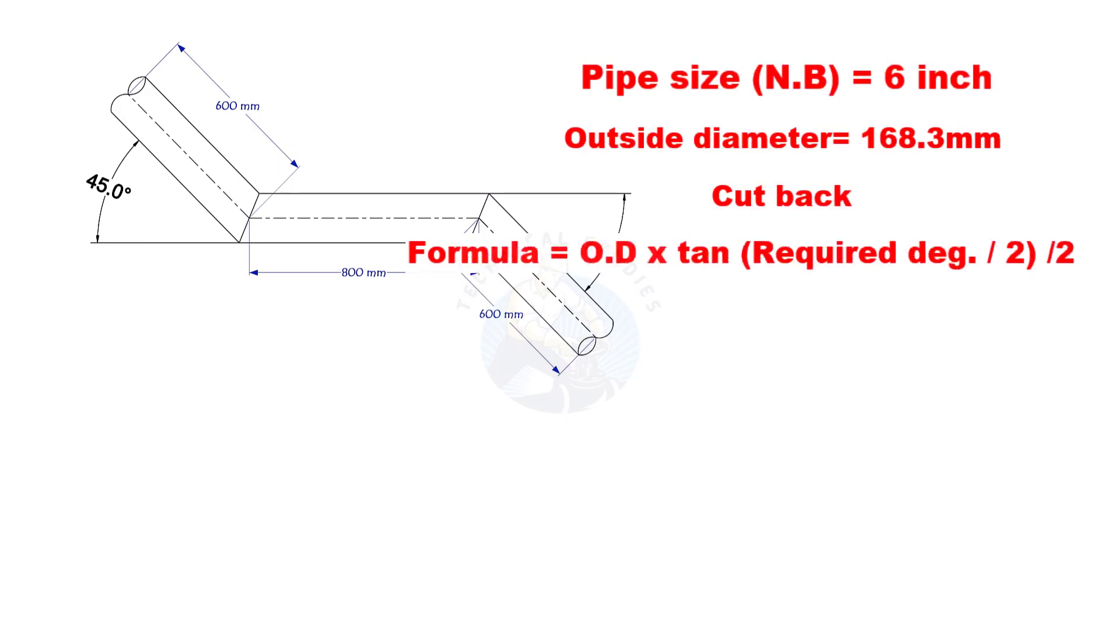Cutback is OD multiplied by tan half degree, divided by 2. Here, the required degree is 45. Half of 45 is 22.5.